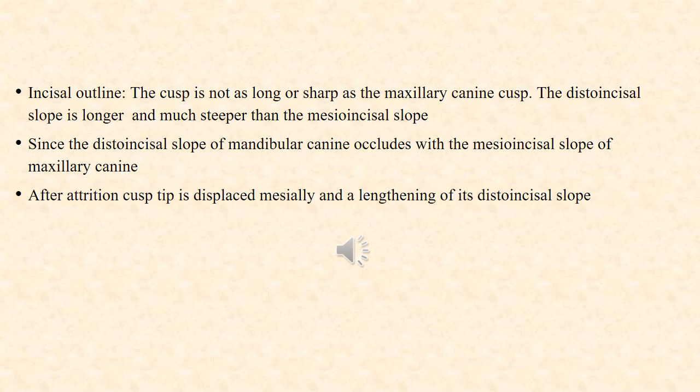The cusp is not as long or sharp as the maxillary canine cusp. The distoincisal slope is longer and much steeper than the mesioincisal slope, since the distoincisal slope of the mandibular canine occludes with the mesioincisal slope of the maxillary canine. After attrition, the cusp tip is displaced mesially and a lengthening of the distoincisal slope takes place.